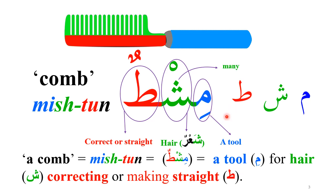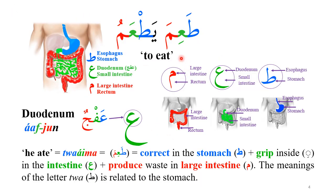For example, the word mishtun, meaning a comb, comes from the root letters meem-shin-twa. The meem with a kasra indicates a tool, shin means shahdun, and twa means to straighten or correct. So mishtun means a tool for correcting hair — very clear.